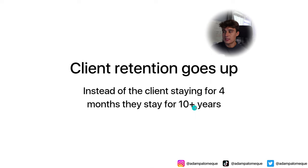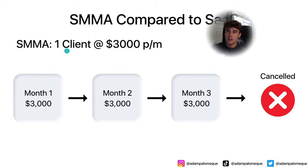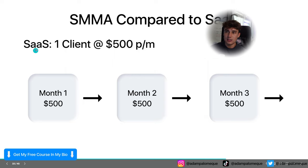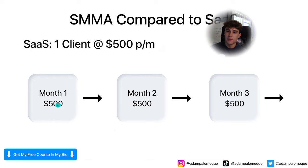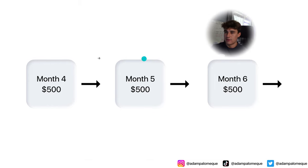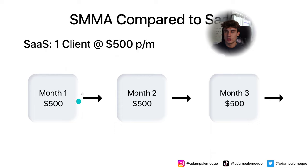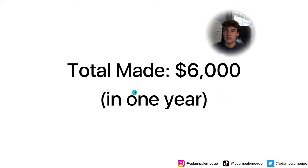Instead of the client staying four months, they stay for 10-plus years. So SMA compared to SaaS: in SMA you get a client at $3,000 per month — month one $3,000, month two $3,000, month three $3,000, then they leave. No business is going to pay $2,000 to $3,000 a month for 10-plus years. People made $9,000 in three months, which is still great. But with SaaS, you get one client at $500 per month — month one $500, month two $500, month three $500, month four $500, and it just keeps going. In one year you made $6,000, and this is all passive income because once you set it up, all the work is done. Once you set them up on the software, it's pretty much just paying to keep the software.